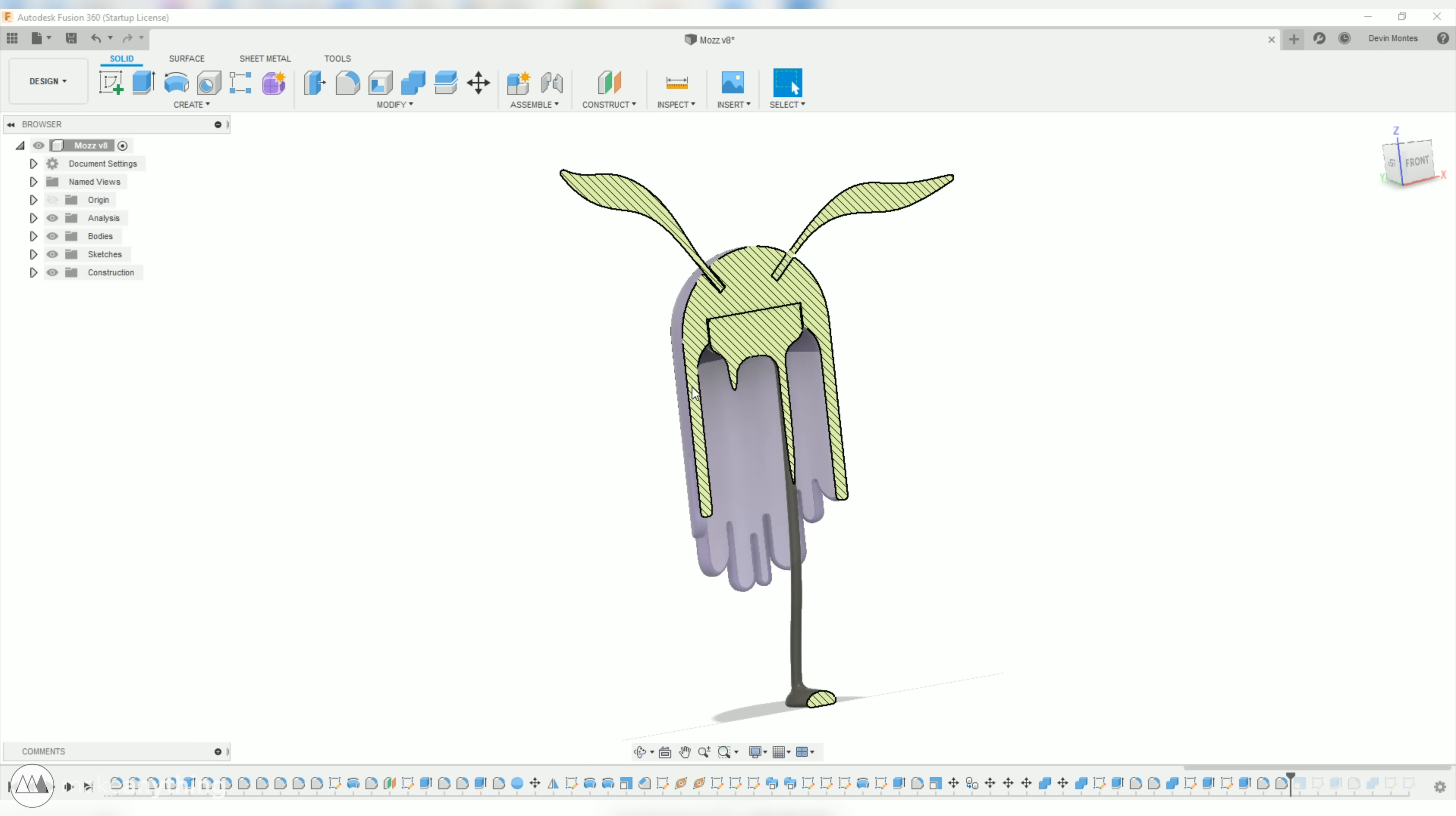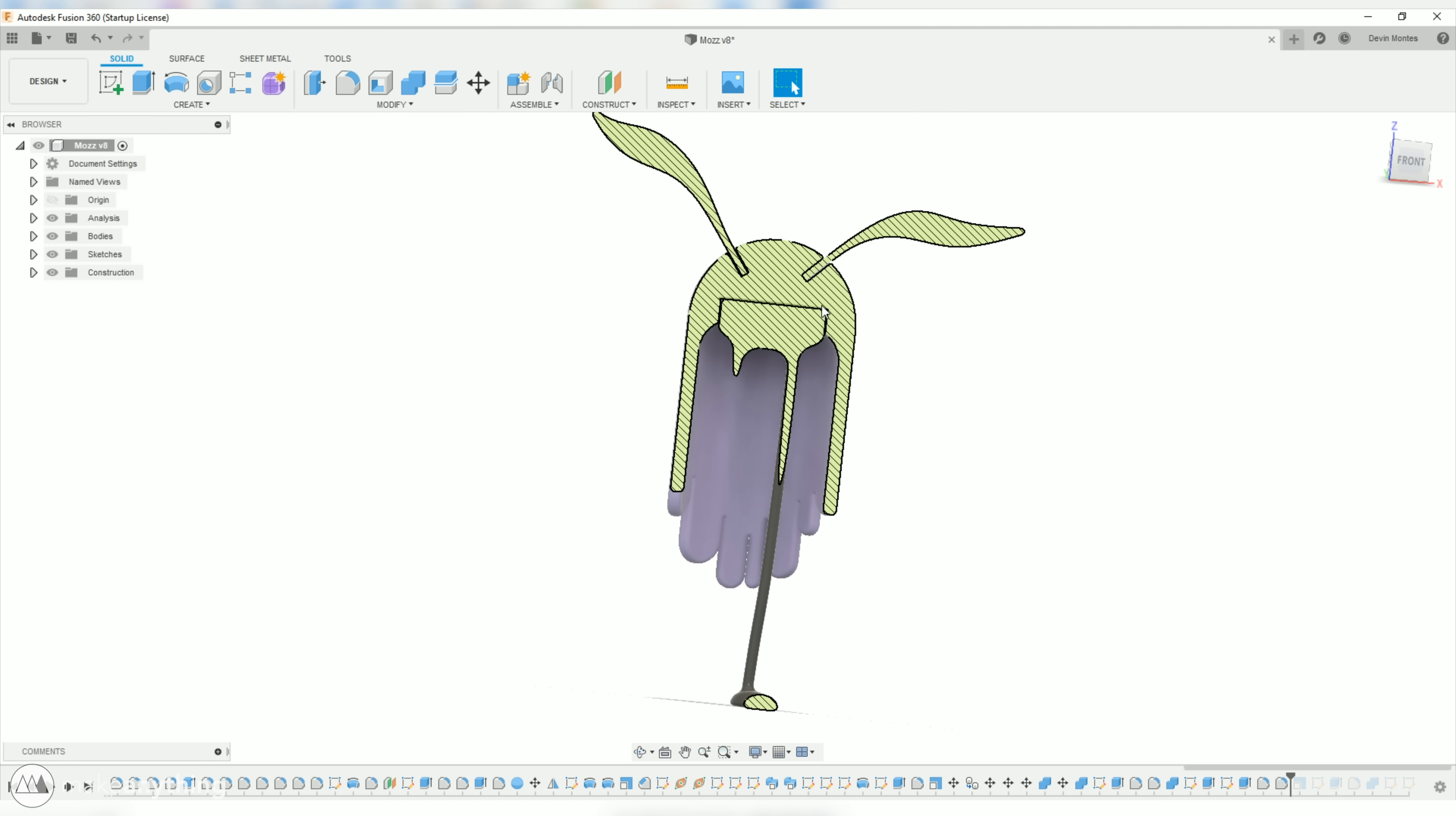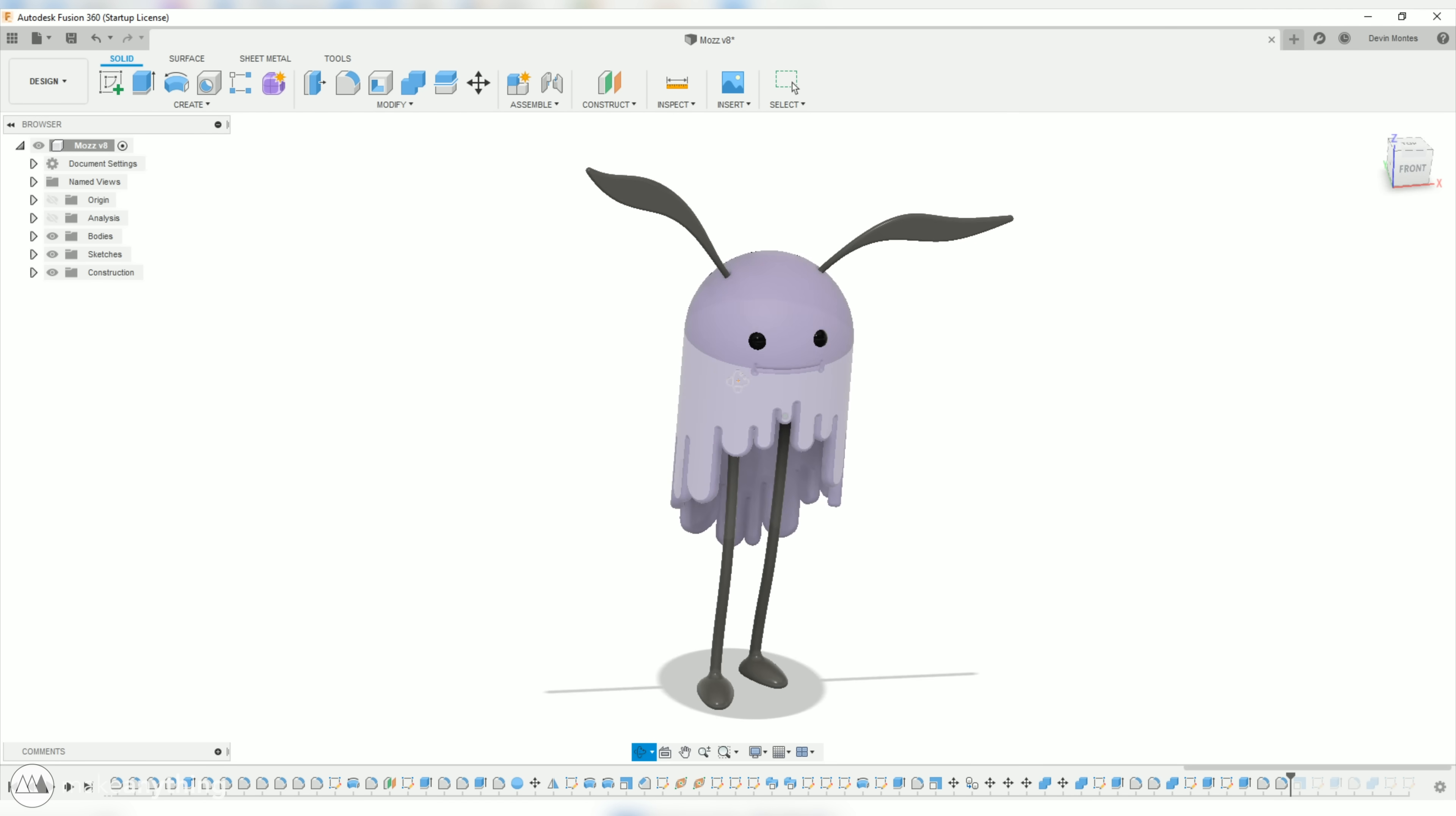As you can see here I split the model up into several parts which will hopefully make it easier to print and paint. I did do a little work on this file after exporting it from Fusion 360 in Mesh Mixer. I kind of bent the ears a little bit more and I also smoothed out these little drippy bits to make it look a little bit more organic.